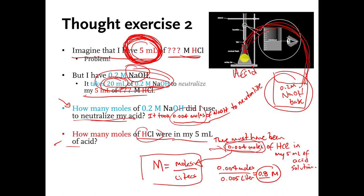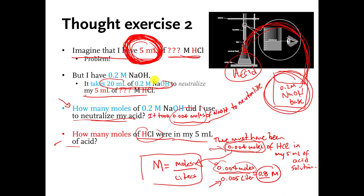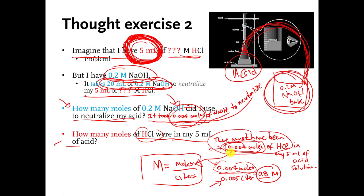In this pretend exercise, we didn't know the acid concentration at the start. We knew we had five milliliters of acid. We took a supply of base, added drips and drops until the acid was neutralized, measured the volume of base needed, used that with the known base concentration to find moles of base, and since equal moles of acid and base were needed, we could find moles of acid — and then calculate the concentration: 0.8 molar.